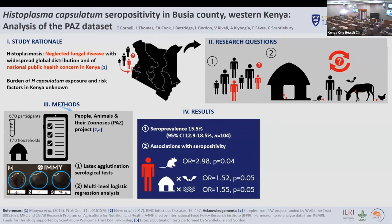The model identified two interaction terms associated with seropositivity. The first involved buildings constructed with mud walls and bats observed around the home, and also buildings constructed with mud walls and spring water collected as a water source. There was no evidence of associations due to clustering of seropositive samples at household nor sublocation level.